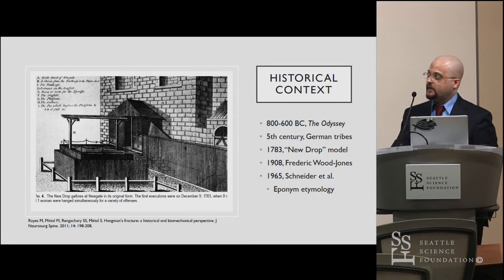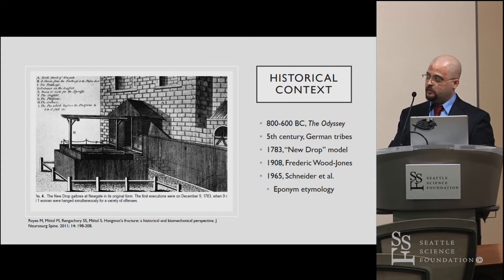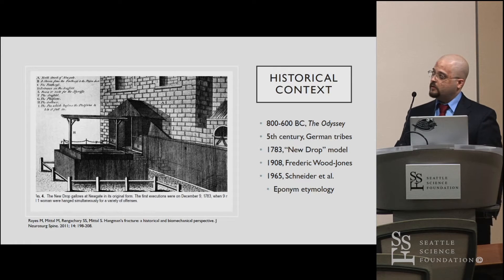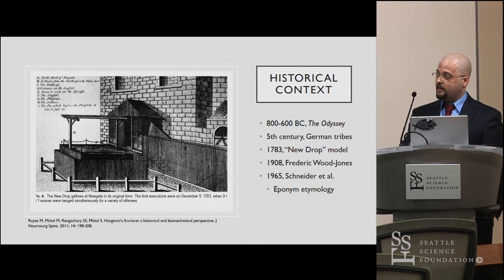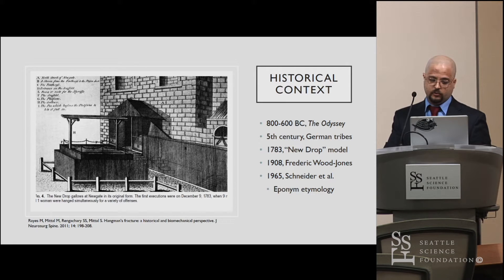For historical context, the earliest recorded incidences of hanging are noted to go back to Homer's Odyssey, about 800 to 600 B.C., where a series of a dozen servants were executed for being disloyal. This continued until about the 5th century, where the German tribes used it predominantly against Romans. But it wasn't until about 1783 where we had a standardization of the process, where the new drop model was introduced in London.